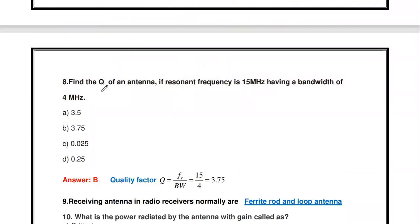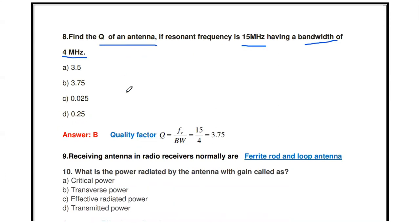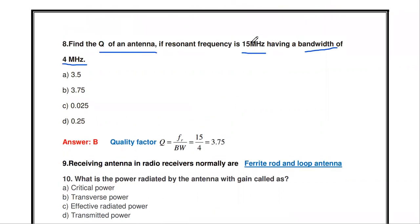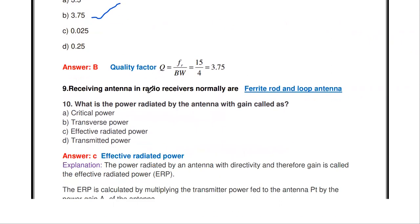Next problem: find the quality factor Q of an antenna if the resonant frequency is 15 MHz and bandwidth is 4 MHz. Using Q = resonant frequency / bandwidth = 15 MHz / 4 MHz. Since both are in MHz, the units cancel, giving Q = 3.75. The quality factor is dimensionless, so the answer is 3.75.